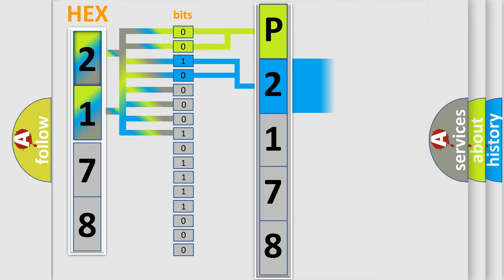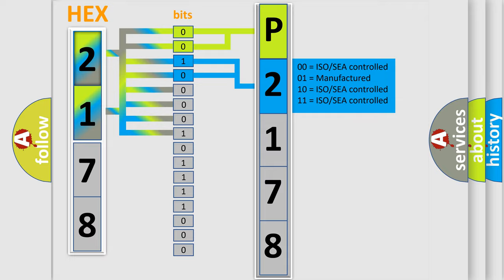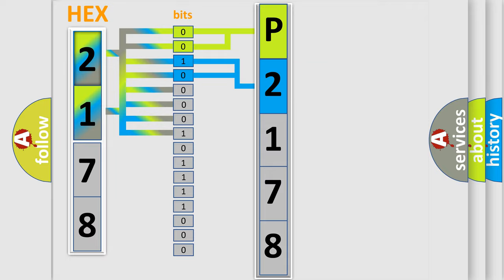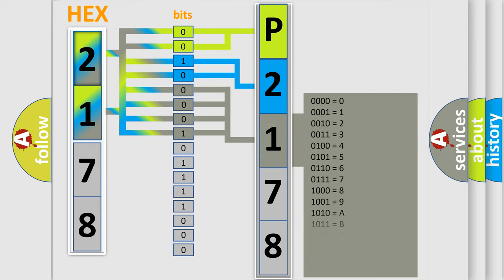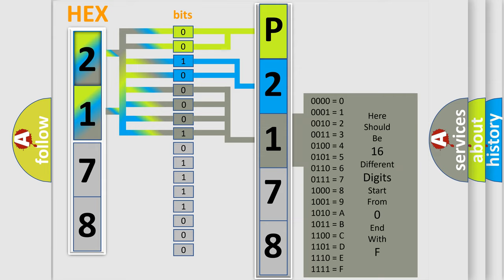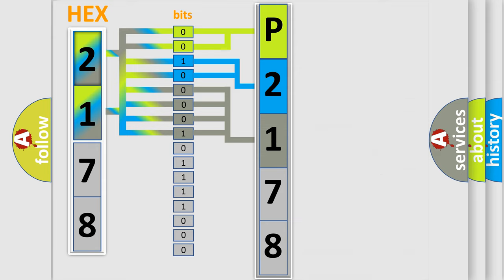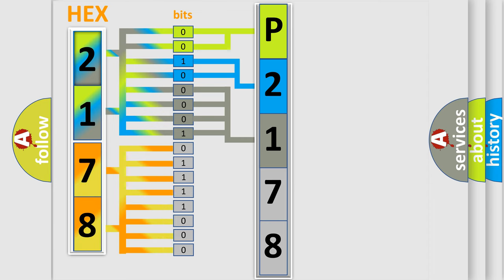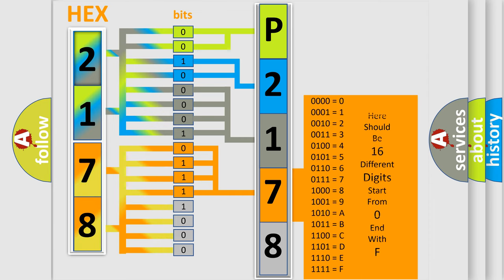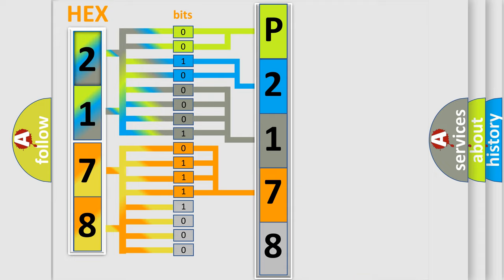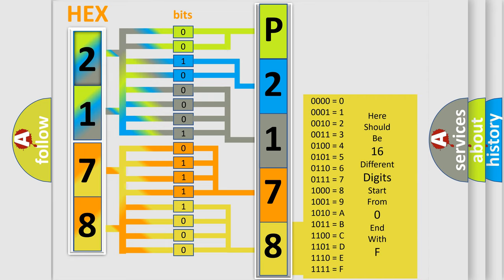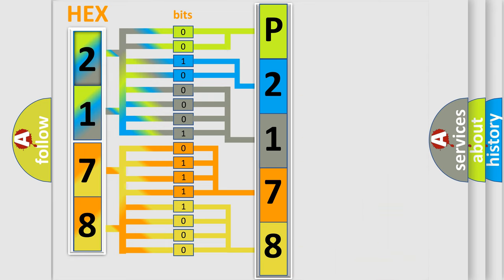The next two bits determine the second character. The last bits of the first byte define the third character of the code. The second byte is composed of a combination of eight bits. The first four bits determine the fourth character, and the combination of the last four bits defines the fifth character. A single byte conceals 256 possible combinations.